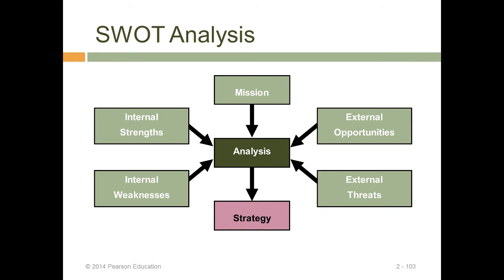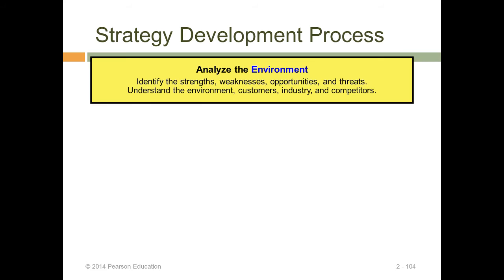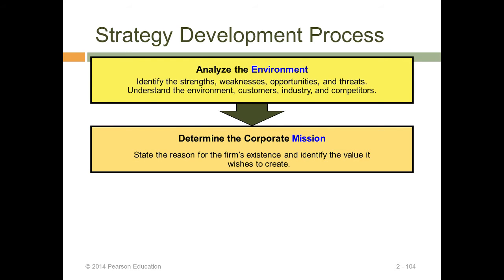The SWOT analysis helps the organization determine key strengths to build on and key weaknesses to protect, while threats include competitor attacks and environmental changes. Opportunities and threats arise from the environment, customers, industries, competitors, and substitute products — all feeding into environmental analysis.